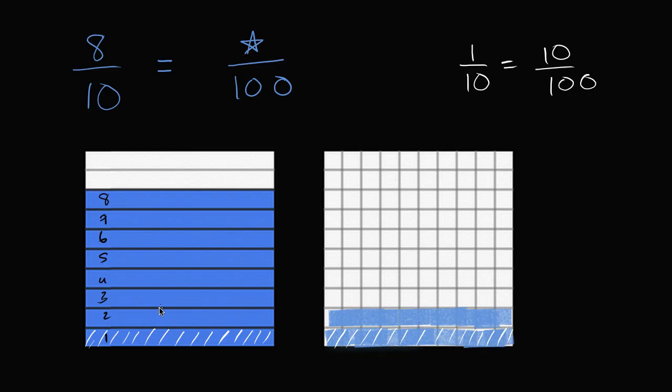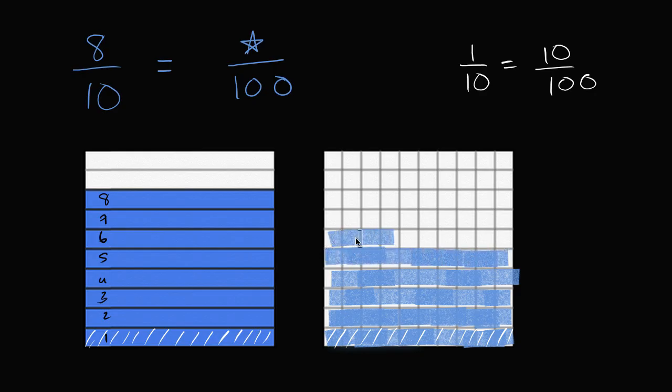So if I want to fill out eight tenths, that's going to be eight times ten hundredths, or eighty hundredths, and let's just see that right over here. So we already did ten hundredths, twenty hundredths, this is going to be thirty hundredths, forty hundredths, fifty hundredths, sixty hundredths, seventy hundredths, and eighty hundredths.